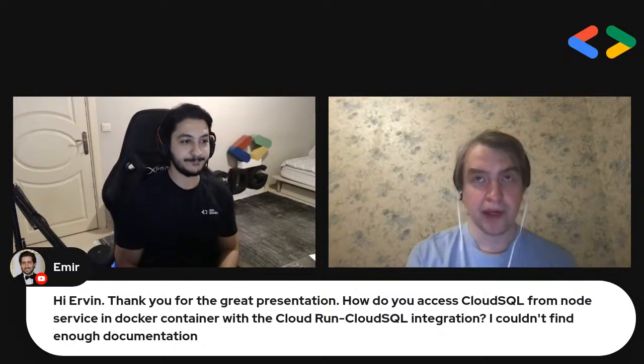We have a question from Emir — he asks how to access Cloud SQL from a Node.js service in a Docker container with the Cloud Run Cloud SQL integration, as he couldn't find enough documentation. In the case of Postgres, you'll have a socket — basically a special kind of file in the operating system — and you'll point your database application to connect to that file instead of a hostname. Cloud Run will handle authentication automatically if you configure the integration correctly. So instead of providing an IP address, you just say that `/var/run/postgresql` is where the database is located, and the application will just work if you have the correct PostgreSQL driver and integration configured. It's the same with MySQL or Oracle databases.